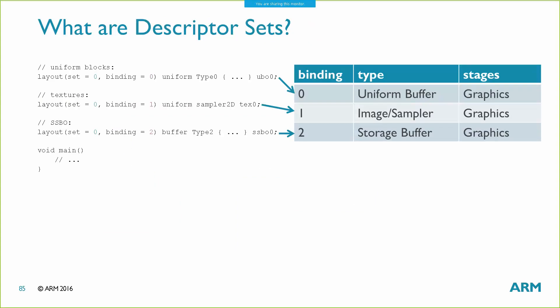Descriptor sets are really just a way of organizing resources into usable blocks — building blocks like Legos. In OpenGL, you're probably accustomed to two ways of doing this on a fine-grained basis: you can either ask the compiler to generate all your binding locations and then ask the API what those are, or you can explicitly create your own binding locations. We don't generally like reflection in Vulkan, so we didn't do that. If you've got a hundred resources for a pipeline, that's kind of cumbersome. So in Vulkan, we've allowed the developer to organize these into sets.